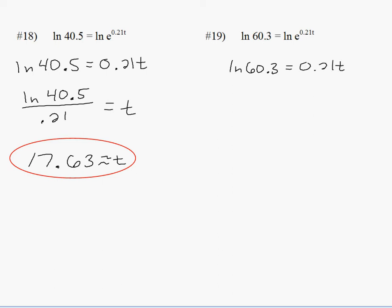Number 19, the right side simplifies to 0.21t. Divide both sides by 0.21. Put it in your calculator. You get 19.52.